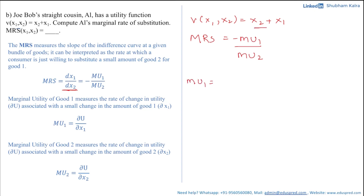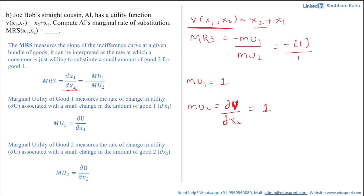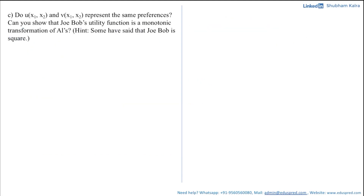Let's calculate mu1 and mu2. Mu1 is the partial derivative of v with respect to x1, which equals 1. Mu2 is the partial derivative of v with respect to x2, which also equals 1. So MRS = −1/1 × 1 = −1. Again, note that MRS is constant, which means the rate at which Al substitutes good 2 for good 1 is constant.